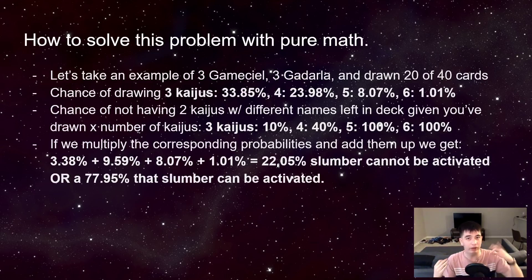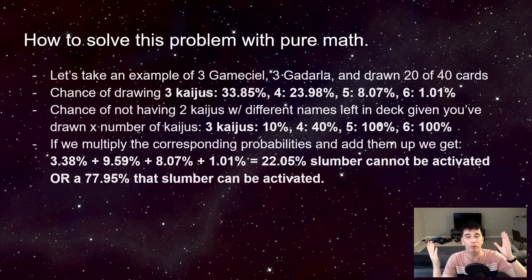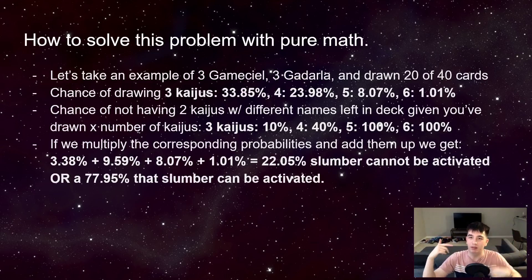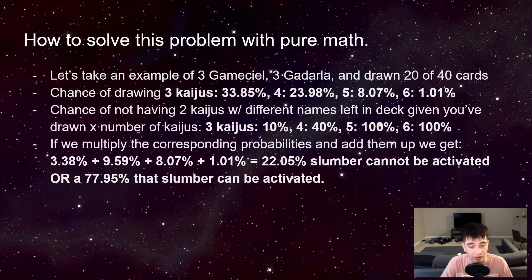We could have drawn Kadarla first, but the math would be exactly the same. Basically, the first Kaiju draw doesn't matter and doesn't affect your calculation. That's the example for three Kaijus. Our four Kaiju example is a little more complicated.